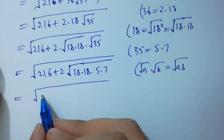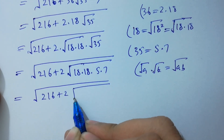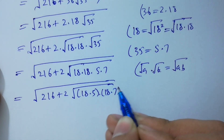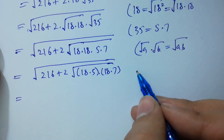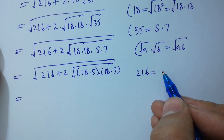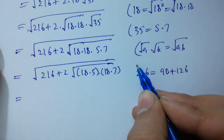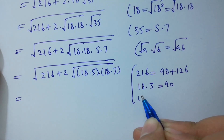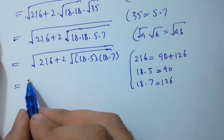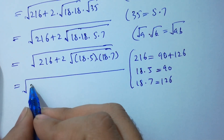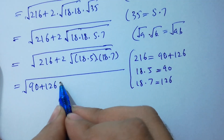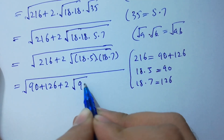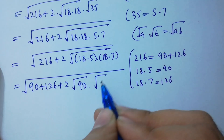We have 216 plus 2 times 18 times 5 and 18 times 7. Since 216 equals 90 plus 126, and 18 times 5 is 90 and 18 times 7 is 126, we have 90 plus 126 which is 216. So here, 2 times square root of 90 times square root of 126.